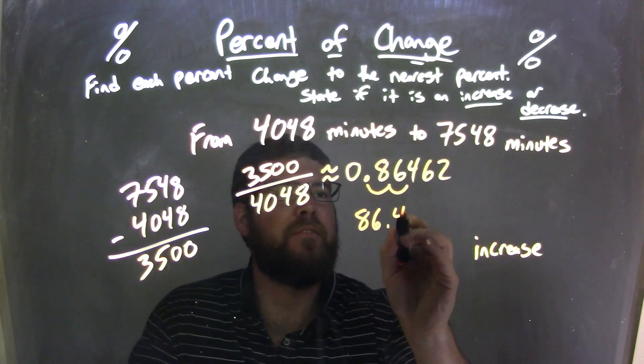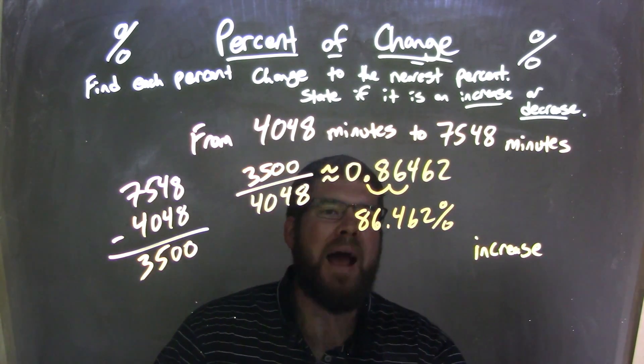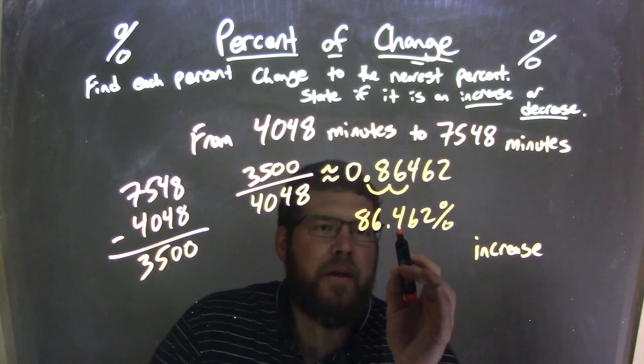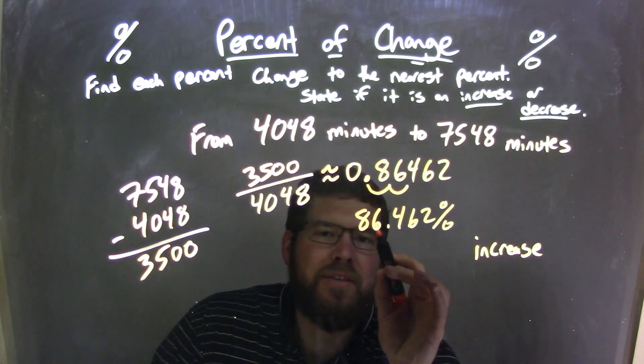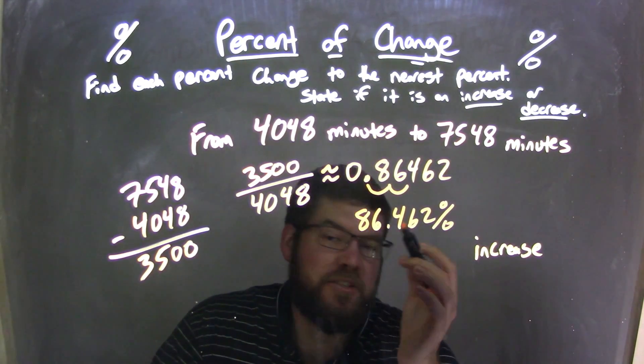I'm going to rewrite that to be rounded to the nearest percent, right? So that 4 here, that 0.4, causes the 6 to stay down, it rounds it down to be just 86.